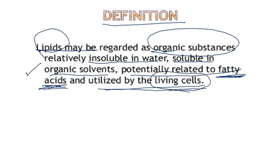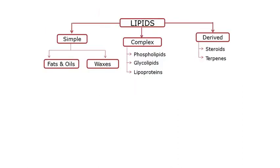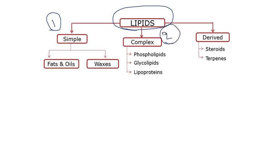You have to understand the definition of lipids. Now we move towards classification. If we classify the lipids, we classify them into three major classes: the first one is called simple lipids, the second one is called complex lipids, and the third one is called derived lipids.